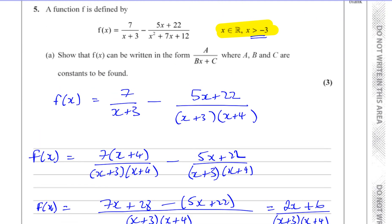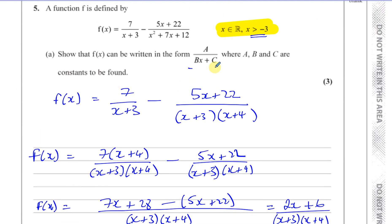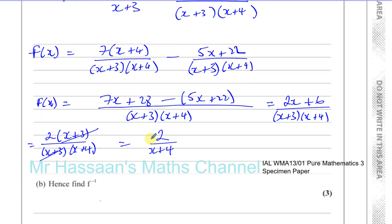That's the required form a over bx plus c. So a equals 2, b equals 1, and c equals 4.